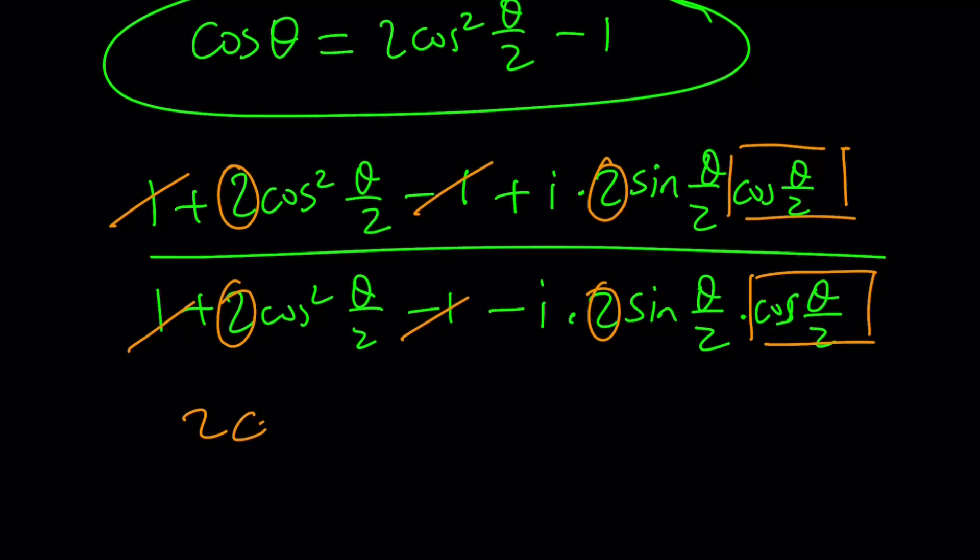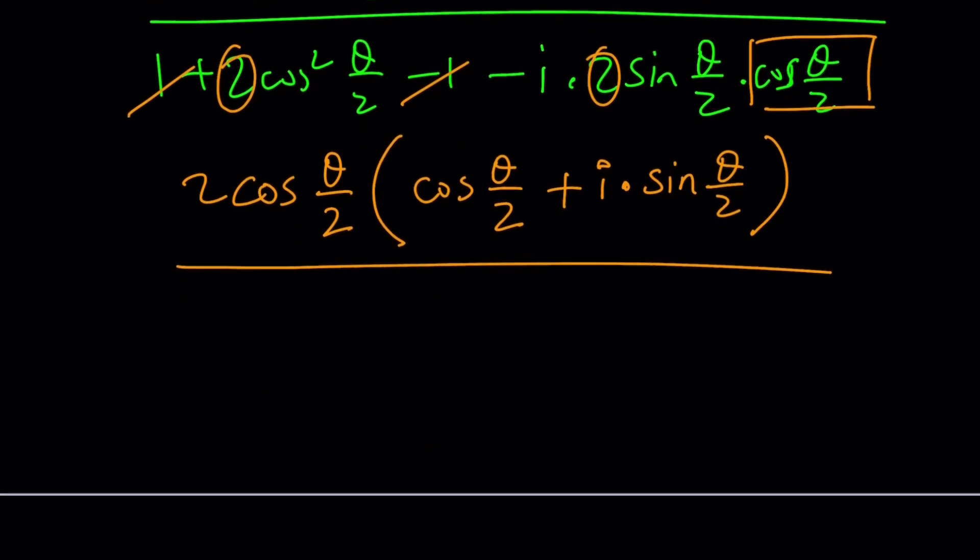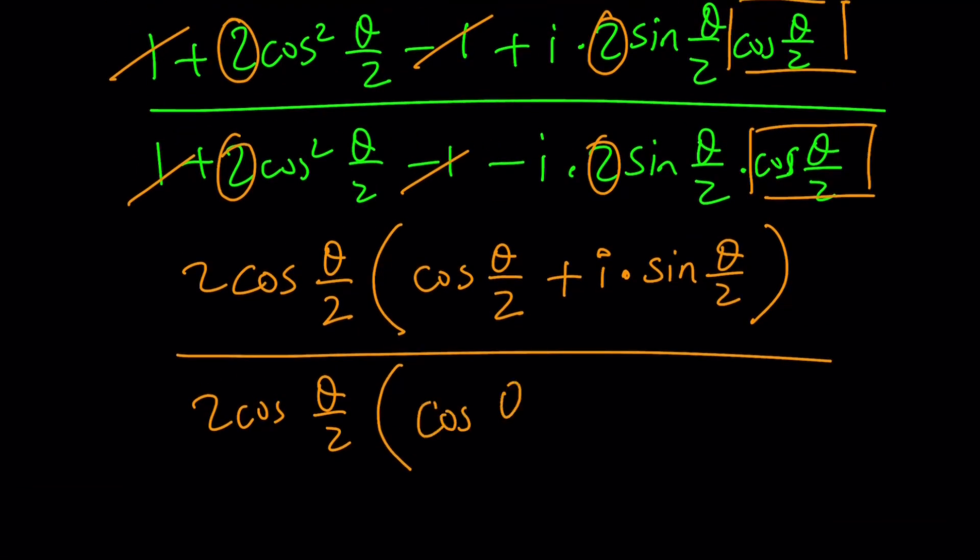2 cosine theta over 2. If you take it out, you're going to get cosine theta over 2 inside, plus i times sine theta over 2. And isn't that awesome? And at the bottom, you get 2 cosine theta over 2 multiplied by, again, cosine theta over 2 minus i times sine theta over 2.